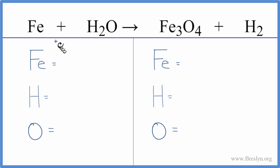Let's count the atoms up. We have one iron, two hydrogens, and one oxygen. On the product side, three irons, two hydrogens, and we have four oxygen atoms.